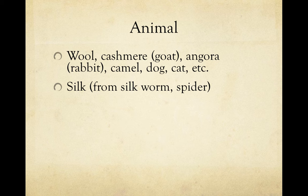Animal natural fibers are categorized into hair and silk. The most common types of animal hairs are wool from sheep, cashmere from goats, angora from rabbits, and then less common types like camel. Dog and cat hairs are also very common, especially in forensic settings. Silk originates from silkworms more commonly, or even spiders.